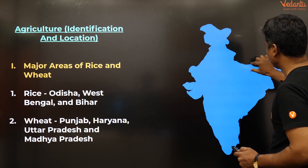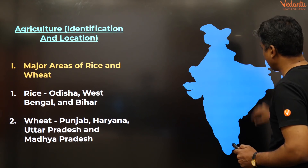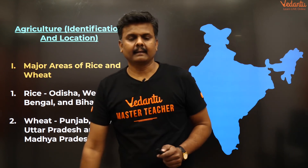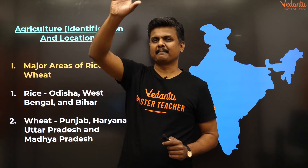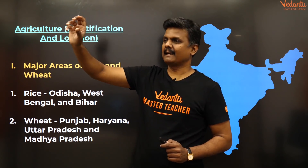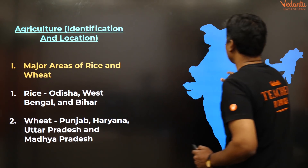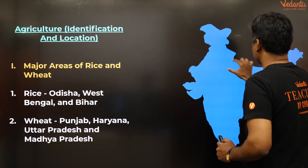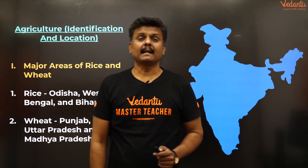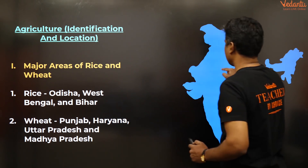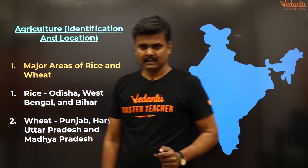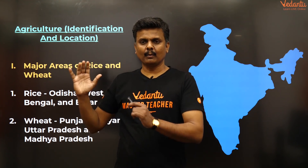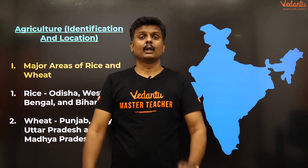So the Bihar–West Bengal–Odisha belt is the major rice-growing region. When it comes to wheat, it is the Punjab belt — Punjab, Haryana, Uttar Pradesh, and Madhya Pradesh. I hope you're clear on where rice and wheat grow and what the major locations of cultivation are.